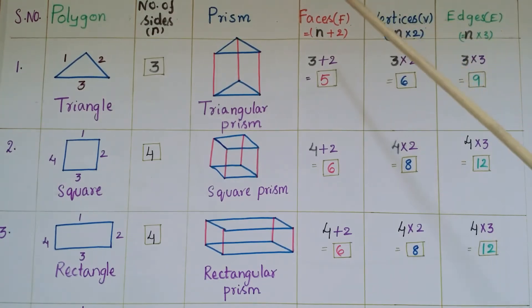If the number of sides of any congruent polygon in a prism is n, then the number of faces of the prism is equal to n plus 2, and number of vertices is equal to n into 2, and edges is equal to n into 3.